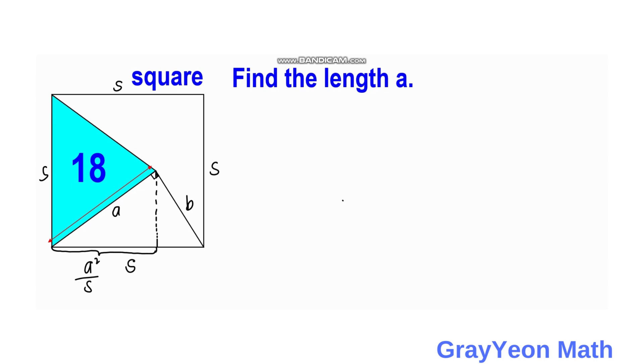Next, we need to use the formula for the area. The area of the triangle is 18, which equals one-half times the base S times the height. The height is A squared over S.